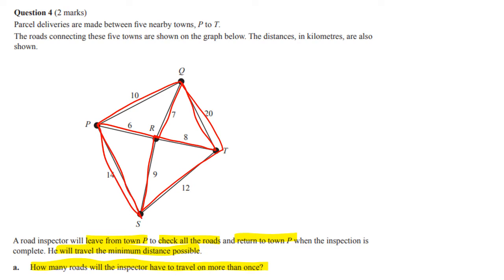There are a variety of ways of doing this, but in this approach there were two roads I had to repeat twice. They weren't the shortest roads, but I had to repeat them. What they're really asking about is an Euler circuit.